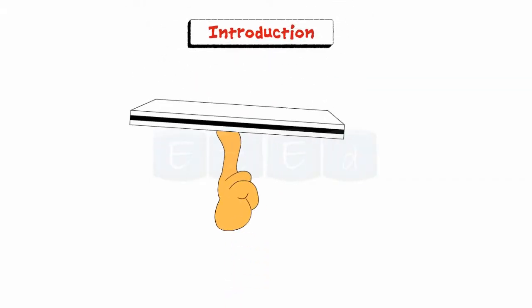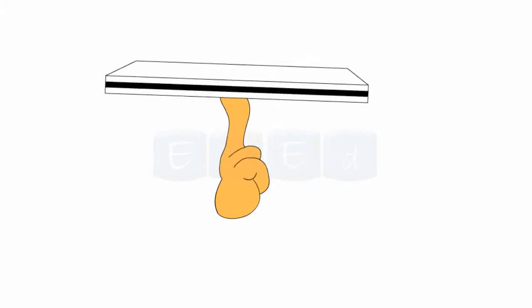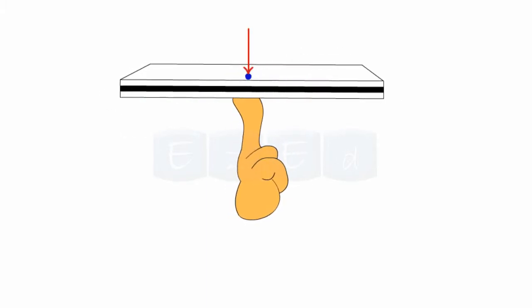Consider you are trying to balance a notebook on your finger. You try to balance the book at different positions along its surface, but at only one point can the book be perfectly balanced. This point is called the centre of gravity of the book.